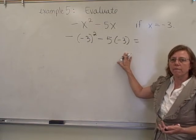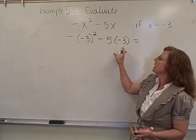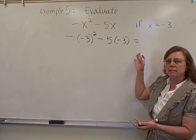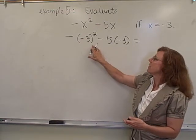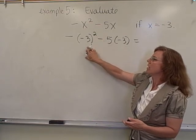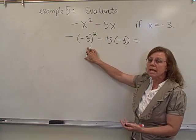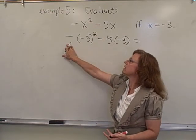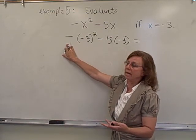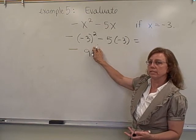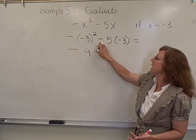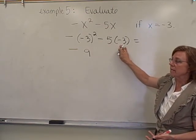Now we're going to follow order of operations. So inside the parentheses, there's nothing to do. They're just there to show the operation, and so we can go to exponents. So I need to square my negative 3. I need to do negative 3 times negative 3. But I still have this negative sign on the outside, so I'm going to have the opposite of positive 9 when I square negative 3.